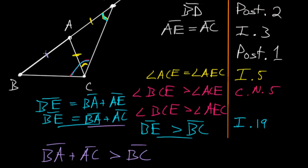We have that this line BA and this line AC, when added together, are bigger than this line BC. And that is exactly what we sought to prove. So we can end with QED.